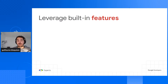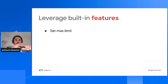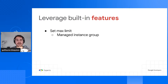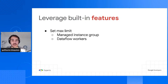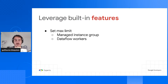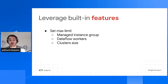Google Cloud also has features to help you reduce costs through max limits. On a Managed Instance Group, you can set a maximum number of VMs — maybe 10 VMs is enough and you don't want it scaling to 1,000. With Dataflow, you can say you need only 10 VMs to process your file — even if Dataflow wants to spin up 50 VMs to go faster, you limit it to control costs. Similarly, you can limit cluster size on Kubernetes or Dataproc.